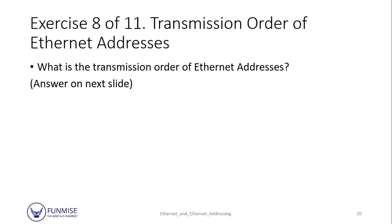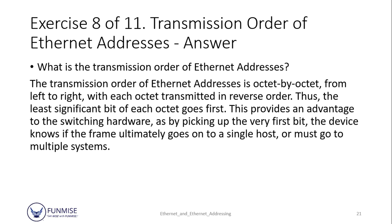Exercise 8 of 11: we're going to understand the transmission order of Ethernet addresses. The transmission order is octet by octet from left to right, with each octet transmitted in reverse order. What that means is the least significant bit of the first octet will go first, so you can pick up what type of address it is based on the order in which the bits come through.